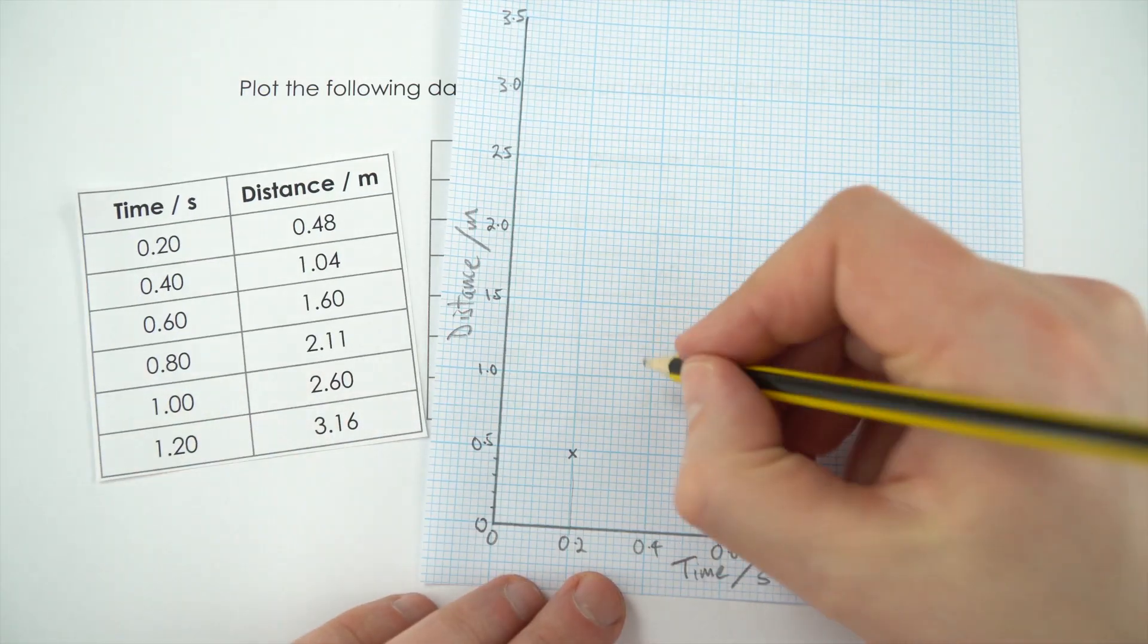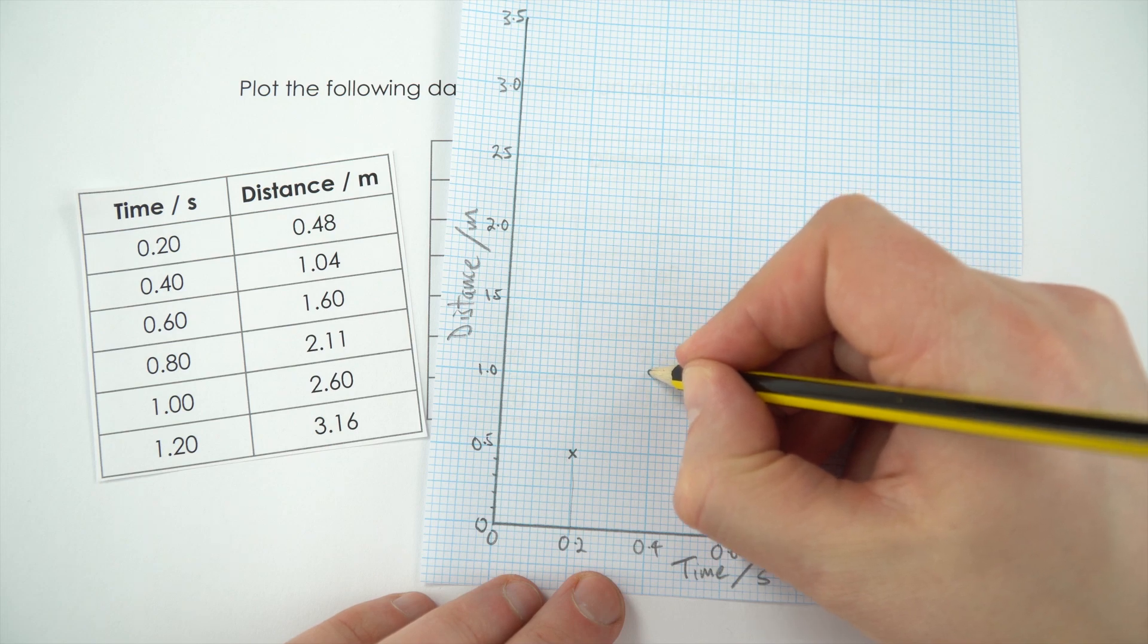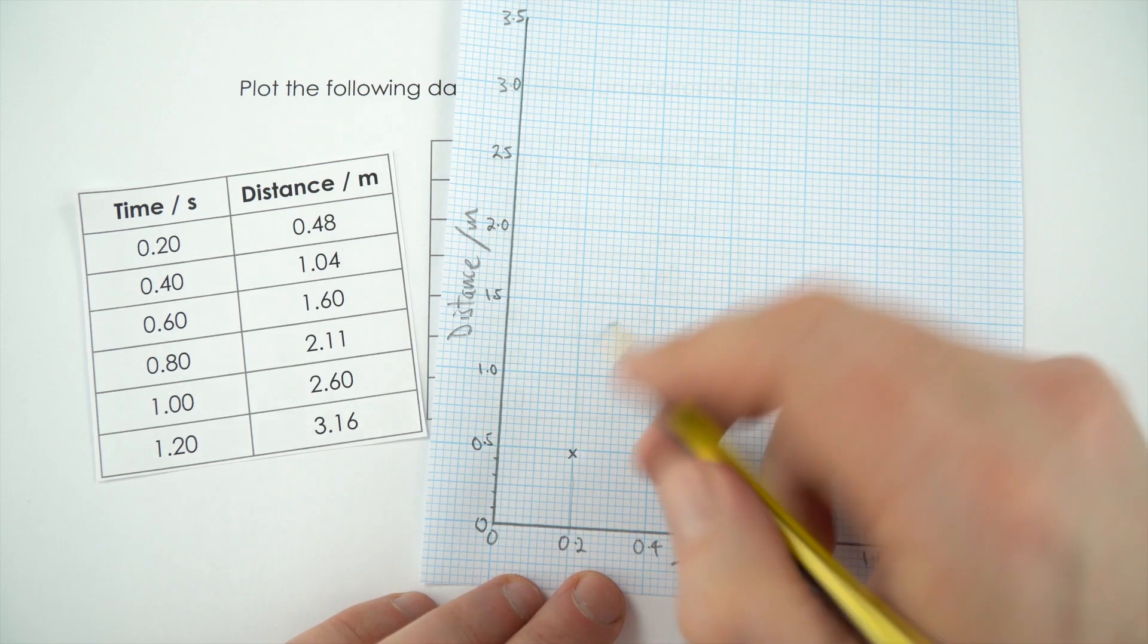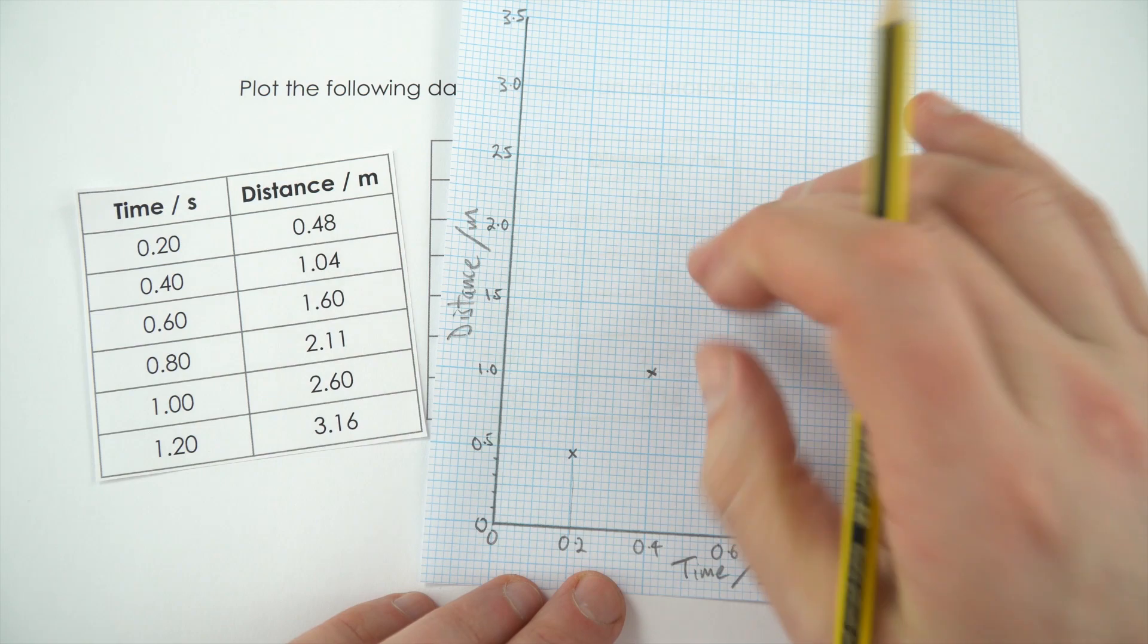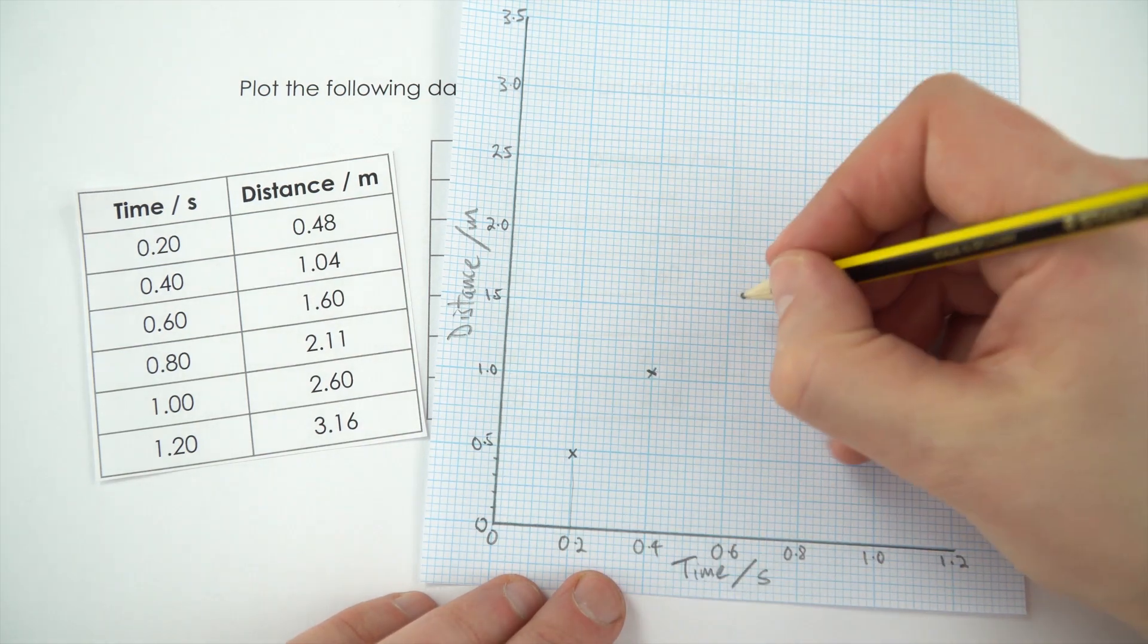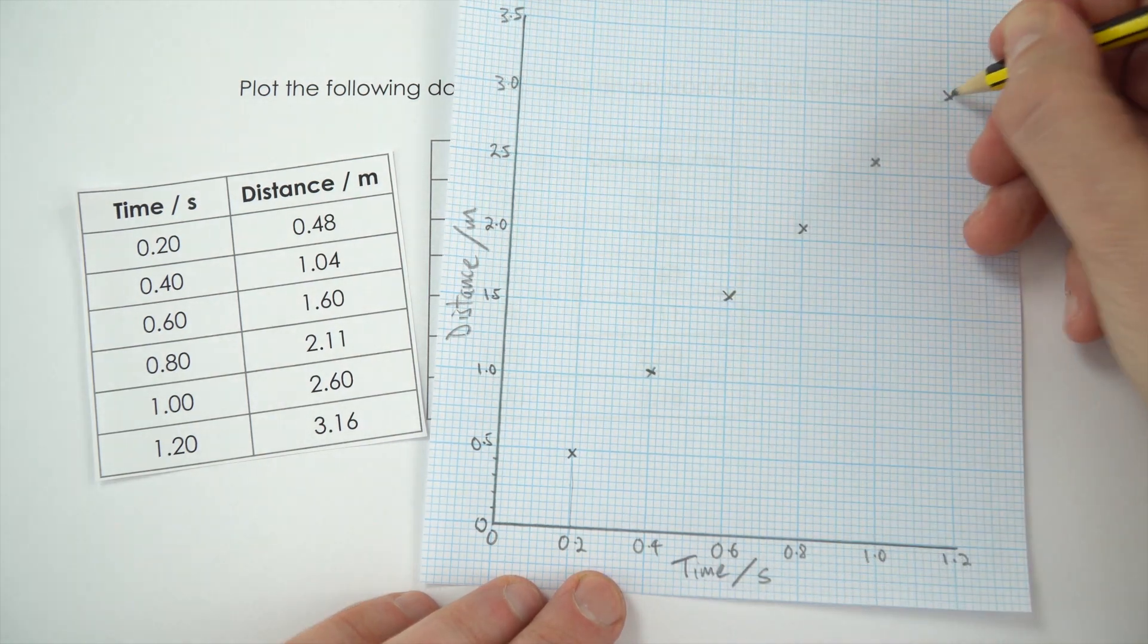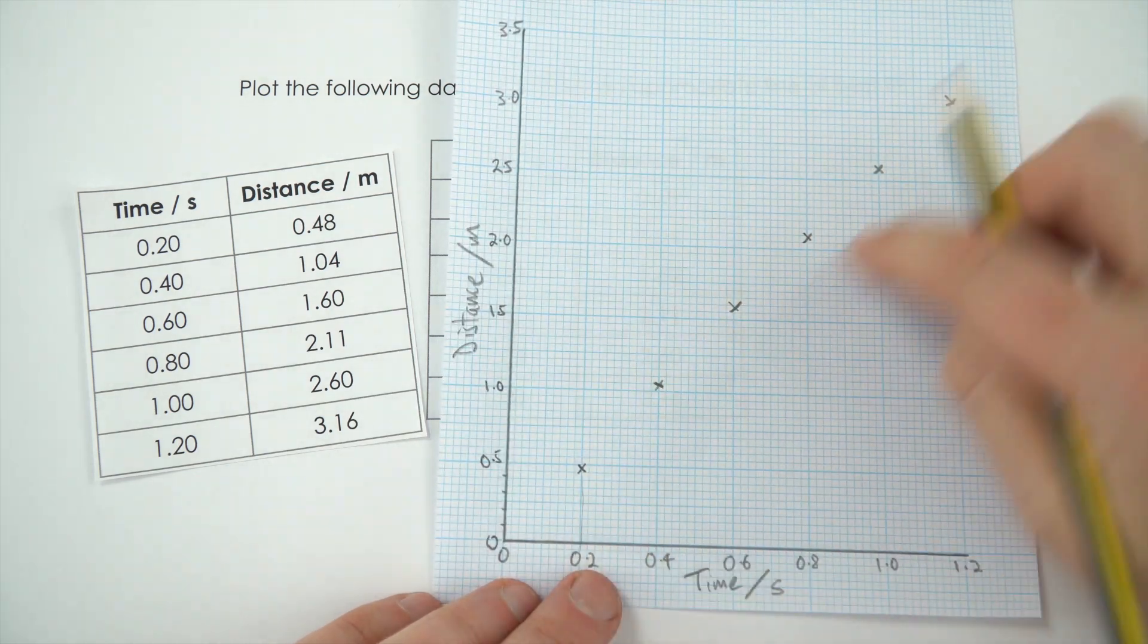When it gets to 0.4, it's 1.04, so that's going to be just over here. It's worth having a look at your scale to make sure that you plot these points accurately. And then we just continue. There we have it, we've got our points plotted.